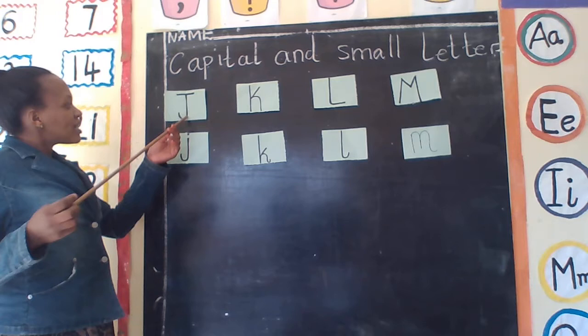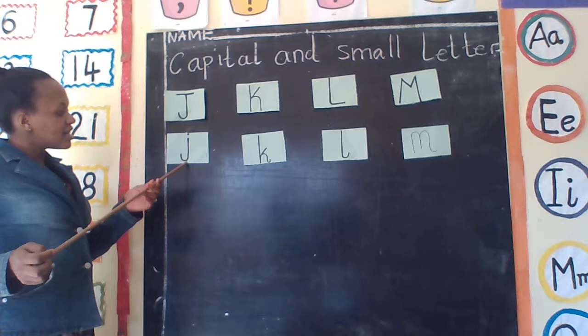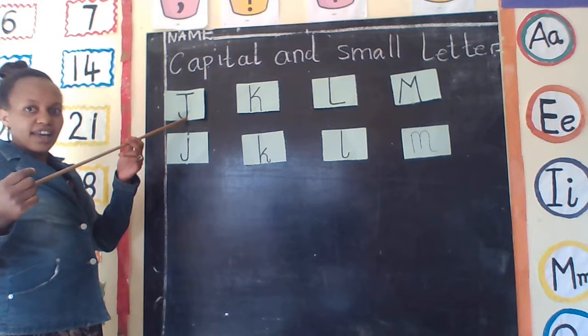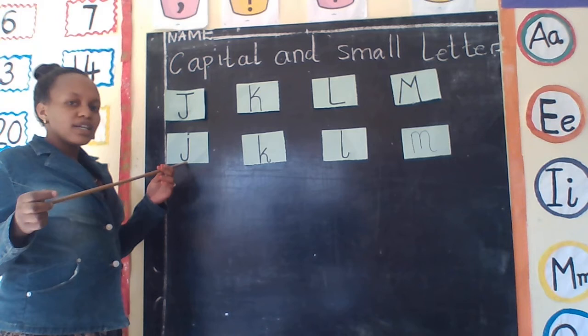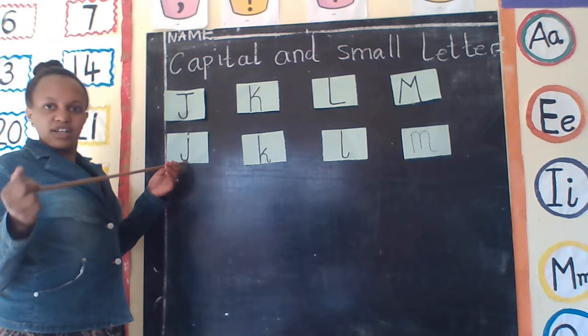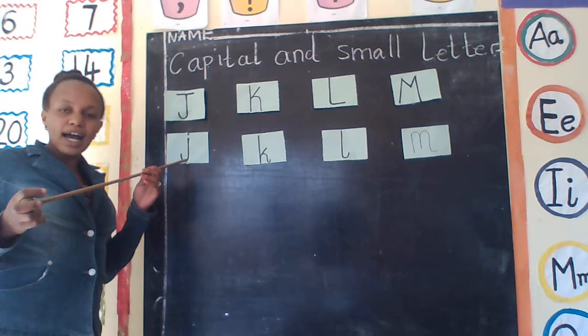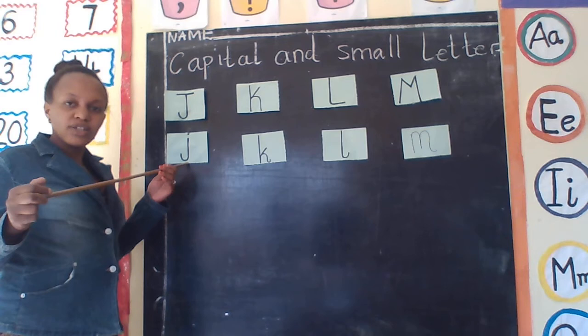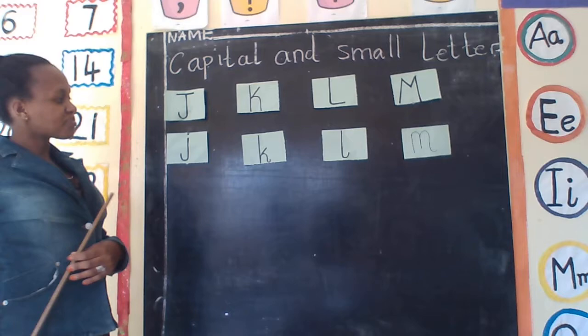This one is capital letter J. And this one also is small letter J. Everyone say capital letter J. Very good. This one also is small letter J. But this one we call sound G. Are we together, my friends? This is letter and also is sound. So, this is capital letter J, this is small letter J, and it also is sound G. Are we together? Good, my friend.